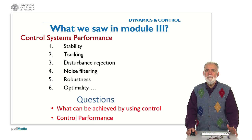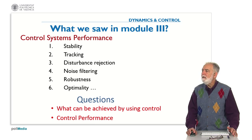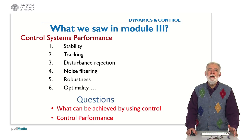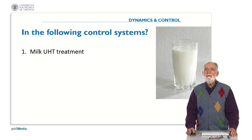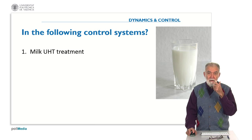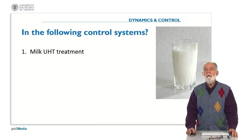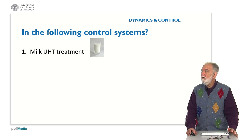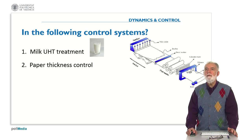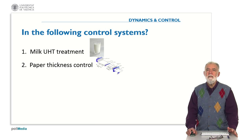Today we have some questions about what can be achieved by using control and in which way we define the control performance. The first question reviews some of the control systems we have seen — trying to differentiate between regulation systems and tracking or servo systems. For instance, in the milk treatment or in the paper thickness control, examples we have seen in the previous modules.